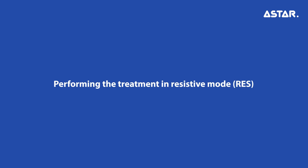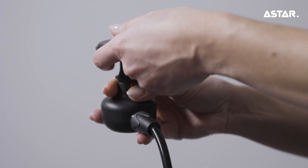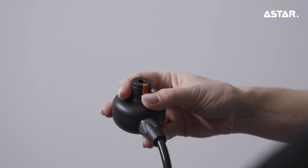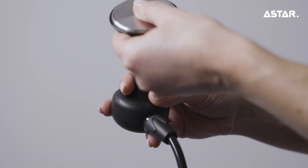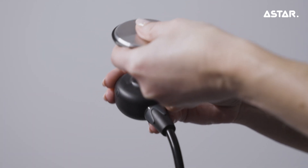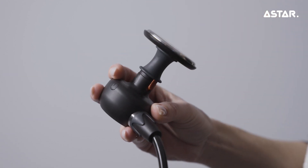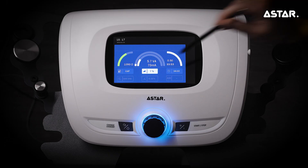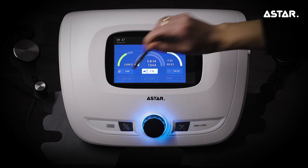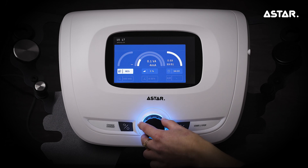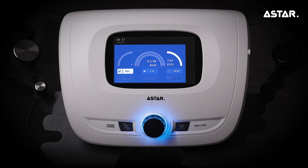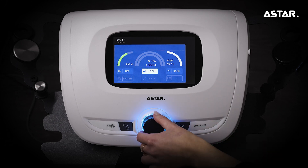Performing the treatment in resistive mode (RES): to disconnect the active electrode, push the red locking button downwards and remove the electrode. Mount the resistive active electrode in the applicator. Select the RES (Resistive) operating mode. Place the electrode on the treatment site and set the power value using the knob.